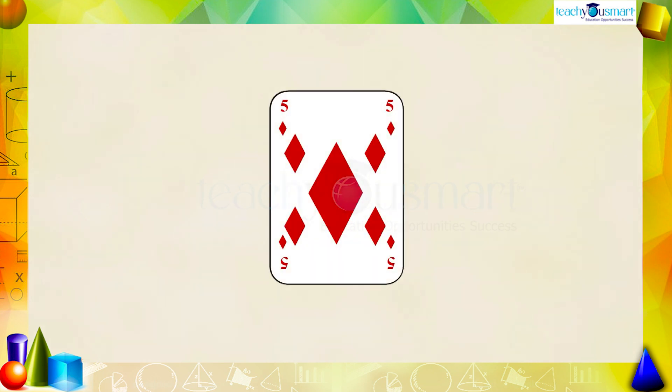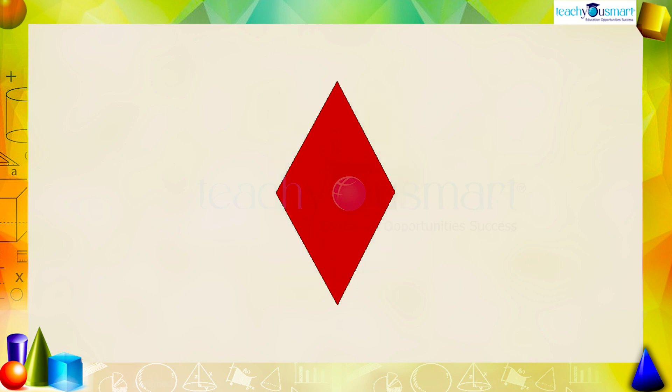Do you remember the quadrilateral in this shape? Oh yes, it's a rhombus. We studied it in the previous chapter, Understanding Quadrilaterals.